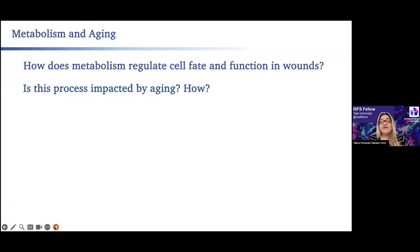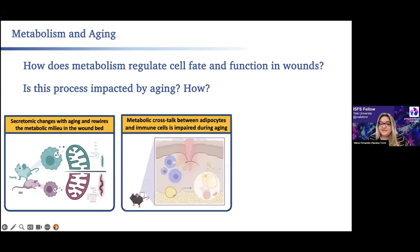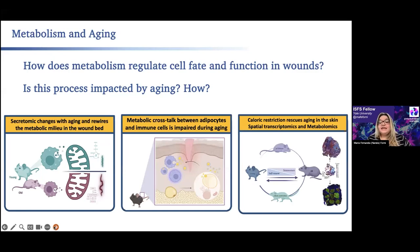More specifically, during my postdoc here at Yale, I've been tackling these bigger-picture questions by working with wound beds in the skin, asking how metabolism regulates cell fate and function in wounds of the mammalian skin and whether this process is impacted by aging. I have three main projects. I won't be able to show all of them, but we have a paper submitted showing that secretomic changes at the single-cell level in the wound bed can create a metabolic milieu. I'll focus today on the metabolic crosstalk between adipocytes and immune cells that is impaired during aging, and at the end I will briefly discuss my third project, which I will take with me to my independent lab when I become a PI.